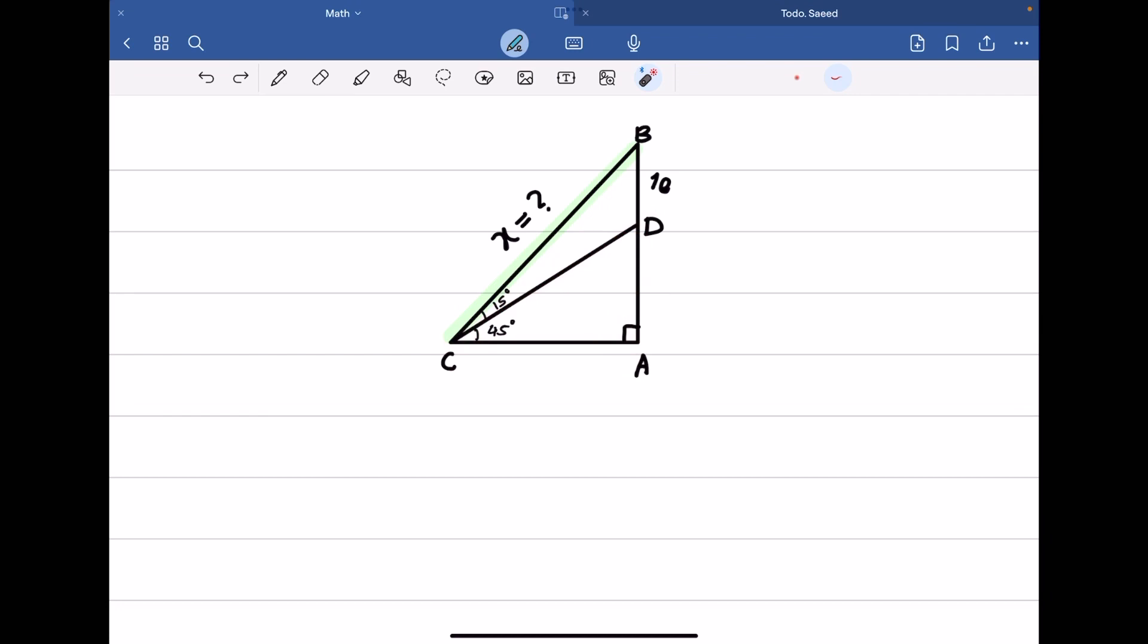We know this triangle is also a right triangle, and because of this 45-degree angle, angle ADC is also 45 degrees.